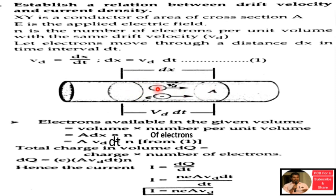Here dx is the distance traveled, and n is the number of electrons per unit volume. Total charge in this volume element: dq equals n times e times A times V_D times dt. Therefore, current I equals dq by dt equals n times e times A times V_D. This is the relation between drift velocity and current.